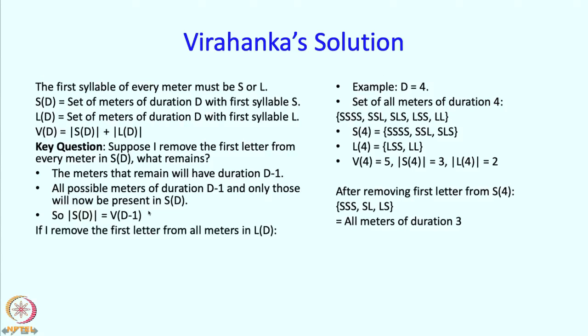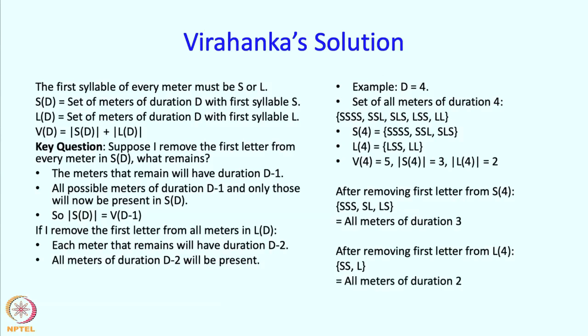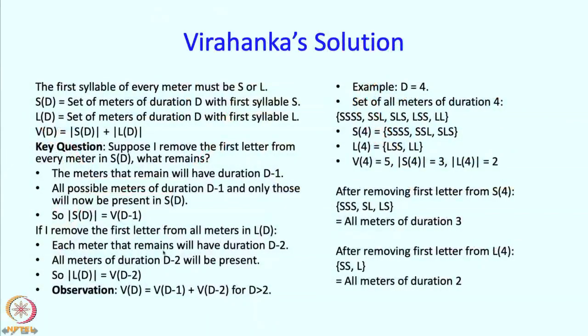We can do the same thing by removing the first letter from all meters in L(d). If you remove the first letter from L(d), L has duration 2, so everything remaining will have duration d-2. By the same argument, all meters of duration d-2 will be present. Checking L(4): removing the first L gives two meters — which are indeed all meters of duration 2. So the size of L(d) must equal V(d-2). Combining these results, V(d) = V(d-1) + V(d-2).